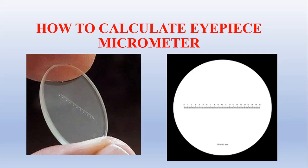Why is this required? When you are going to check any microscopical view — when you are going to determine or check the size of a microscopic particle — there is a need for the eyepiece micrometer. So the calibration of the eyepiece micrometer is necessary.